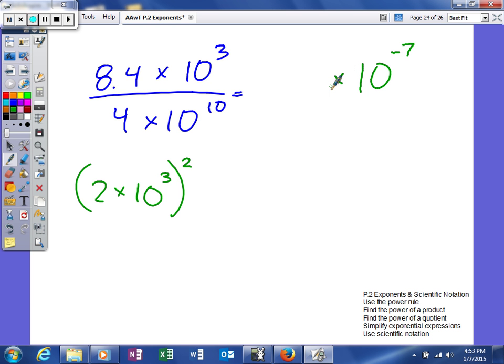And anytime you're finding the quotient of two numbers in scientific notation you're actually just going to divide them. So 4 will go into this 2.1 times. So it's going to be 2.1 times 10 to the negative seventh power.